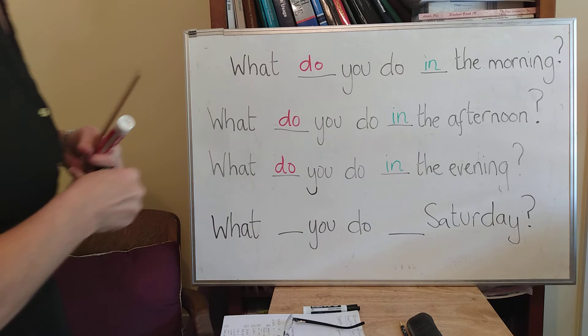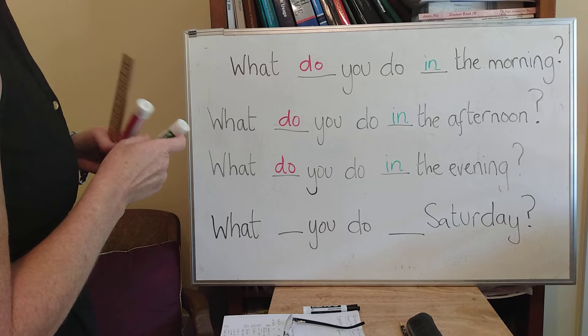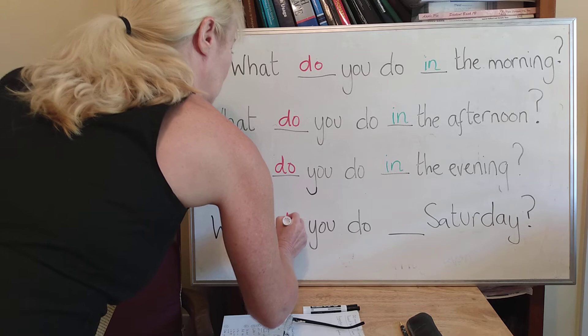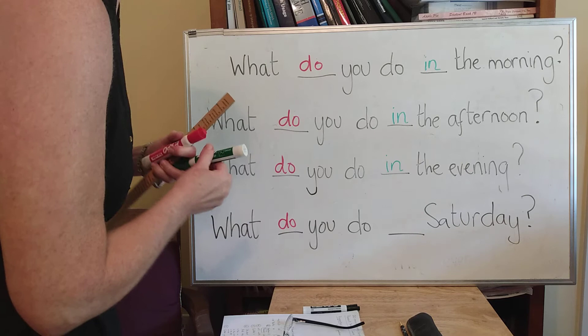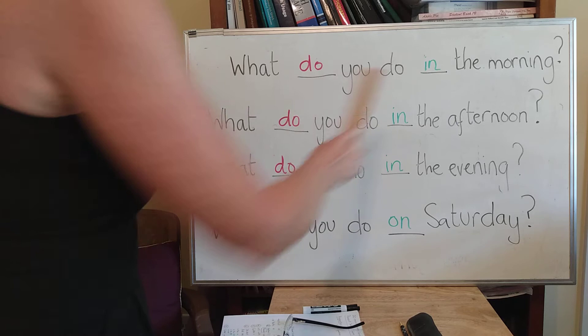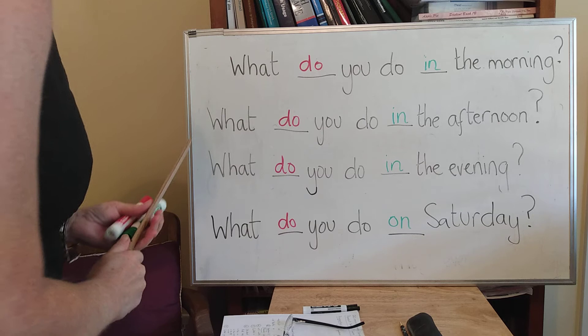Let's look at that last sentence right there. 'What you do in the evening — Saturday.' So be careful with this one. What's our missing word here? What do you do on Saturday? What's Thursday — in the morning, in the afternoon, in the evening. So here are our questions.